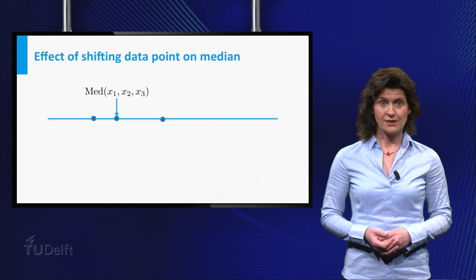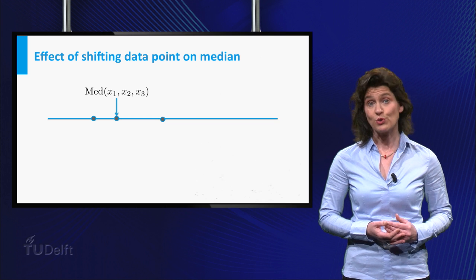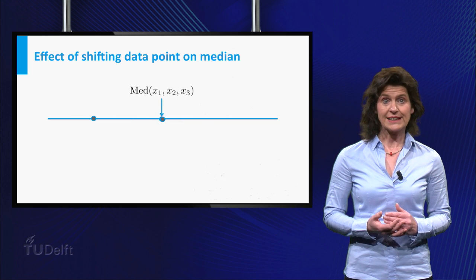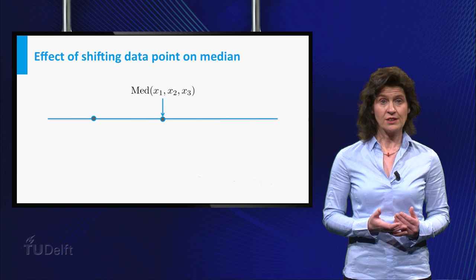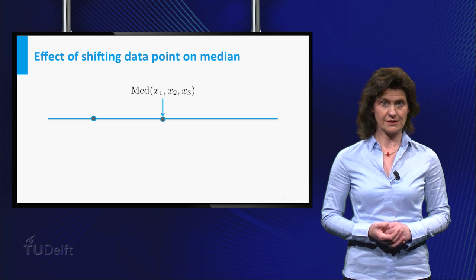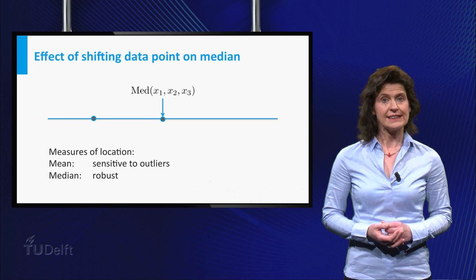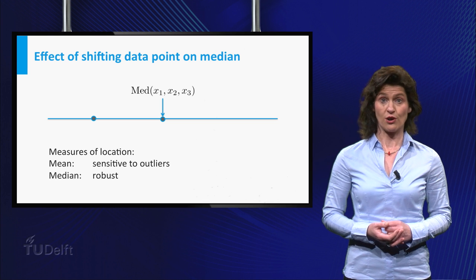Just for fun, look what happens to the median if one of the data points moves to the right. The median can change, but at some point, moving the point further to the right has no effect on the median. The terminology for this property of the median is that it is a robust measure of location.